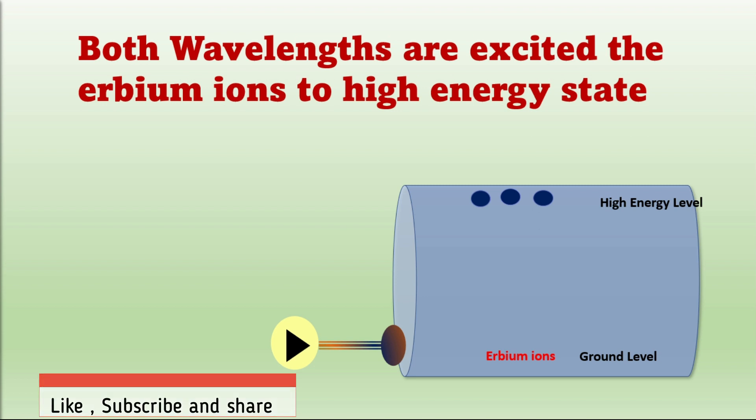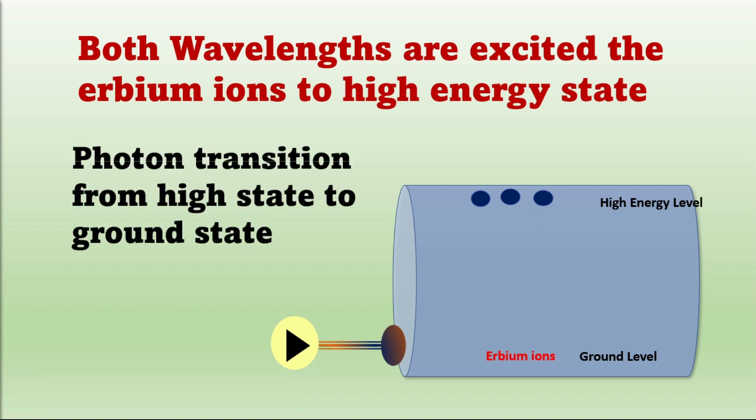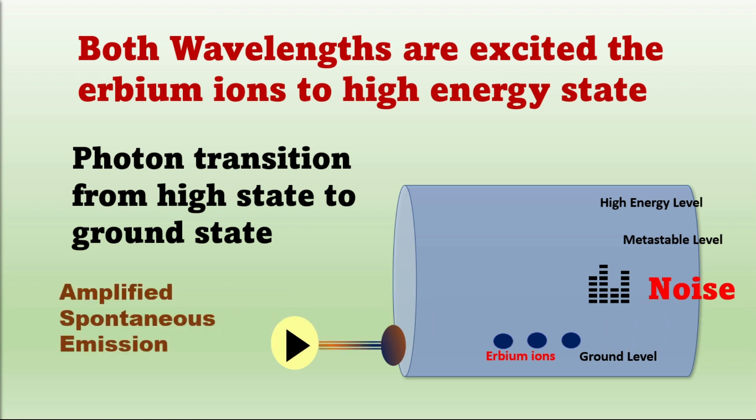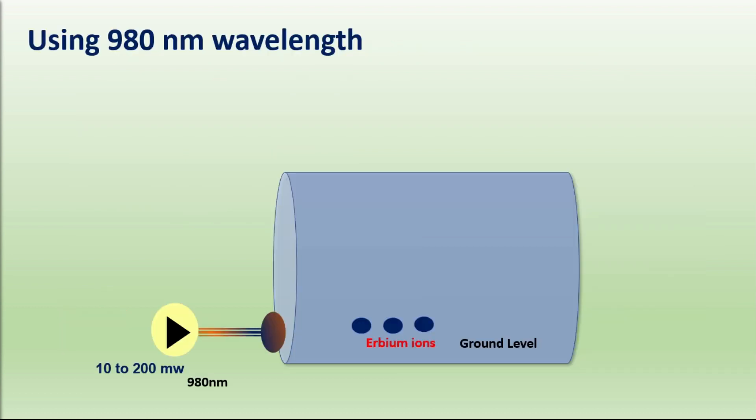And from there ions start dropping to ground. When photons transition from high state to ground state, produce lots of excess noise. This noise is called amplified spontaneous emission and this excess noise varies based on wavelengths used to excite ions, which makes the difference of EDFA pump wavelengths. When using 980 nanometers wavelength, wavelength produces less ASE noise.